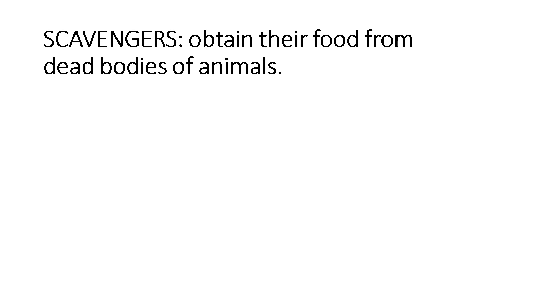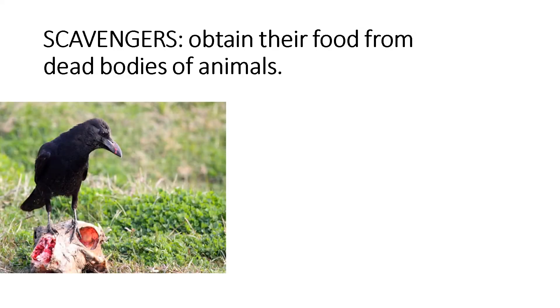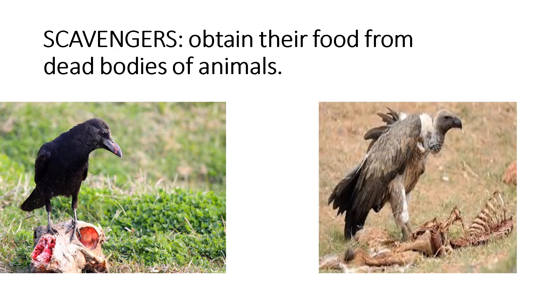Scavengers obtain their food from dead bodies of animals. Scavengers don't hunt or kill any other animal, but they feed on the dead bodies hunted by other animals. Here in this picture, you can see a hyena feeding on dead bodies hunted by other animals, so hyena is a scavenger. Other examples of scavengers are crow and vulture, which also feed on dead bodies hunted by other animals. So hyena, crow, and vultures are examples of scavengers.